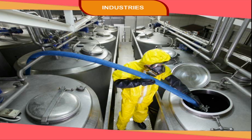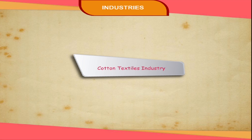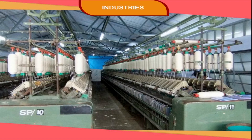In India, the chemical industry is located around big metropolitan centers such as Delhi, Bengaluru, Mumbai, and Kolkata. India is one of the major producers of chemicals and drugs, which it exports to other developing countries. Apart from India, China and Japan have also developed chemical industries in Asia.